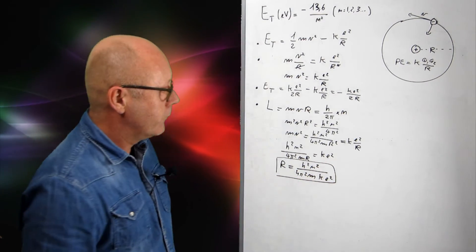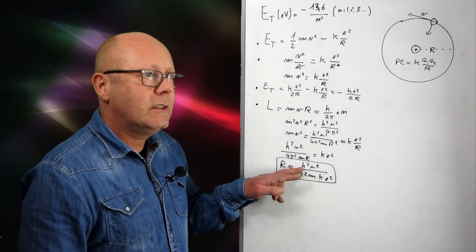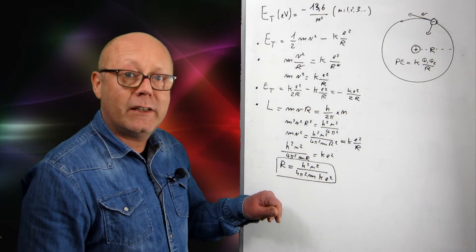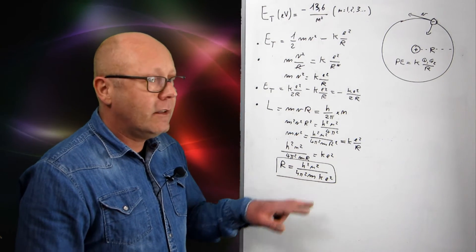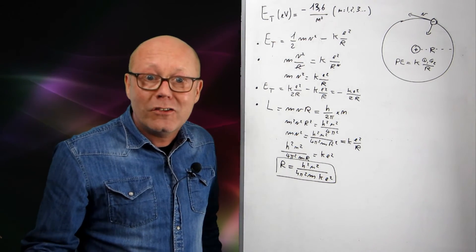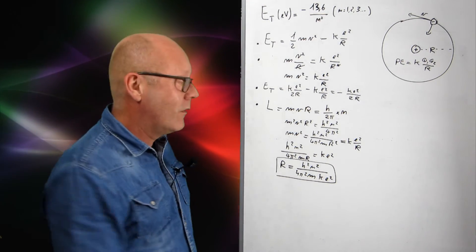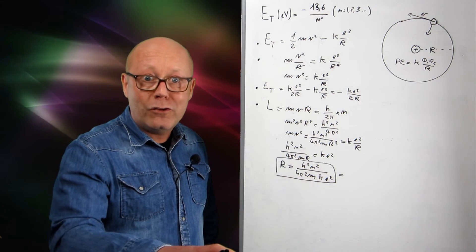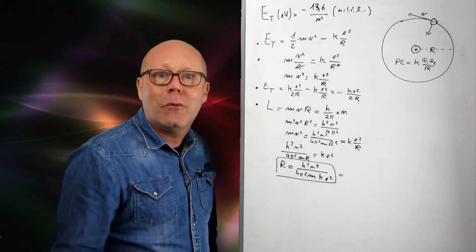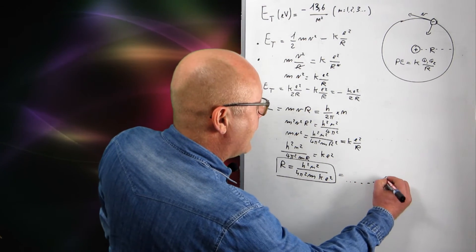Now, look at that. h is a Planck constant, 6.63 times 10 to the minus 34 joules-seconds. 4pi-squared is a number, m is the mass of the electron, k is the Coulomb constant, and e are the elementary charges. These are all universal constants. You actually can plug in the numbers now. Why don't you do that? Pause the video, and take your data booklet, plug in the numbers. And you should have something by n-squared.